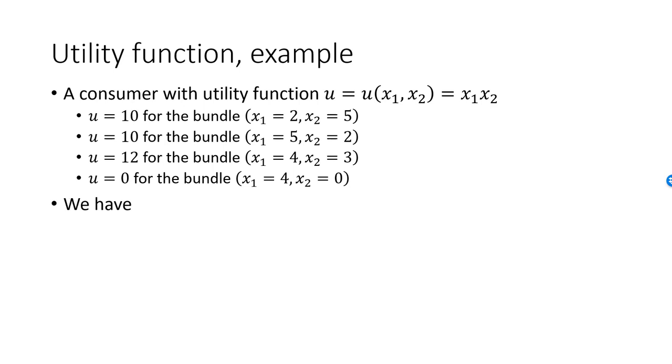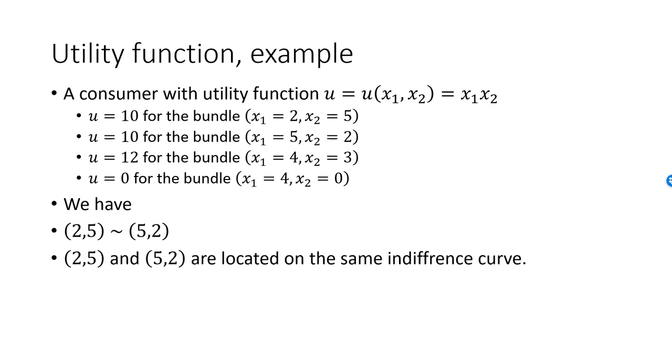From this example, we can see that she's indifferent between the bundles (2,5) and (5,2). Two cookies and five glasses of milk is as enjoyable to her as five cookies and two glasses of milk. A consumer with this utility function will have an indifference curve containing both these two bundles.